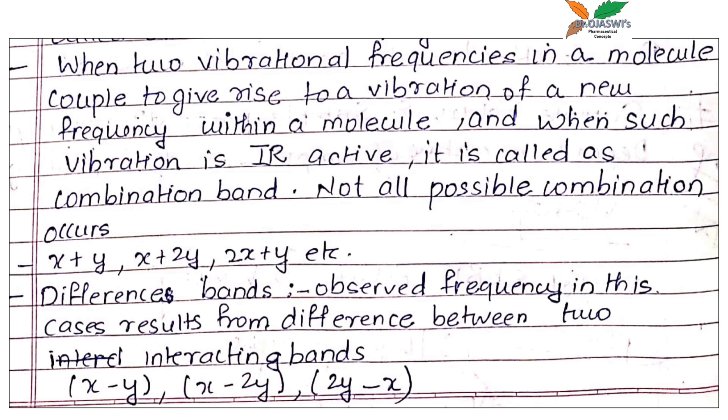Some combinations are X plus Y, X plus 2Y, 2X plus Y, and etc. Now, coming to the difference band, observed frequency in these cases results from the difference between the two interacting bands, such as X minus Y, X minus 2Y, and 2Y minus X.